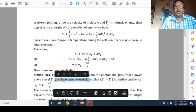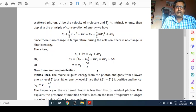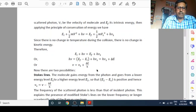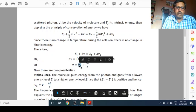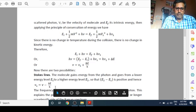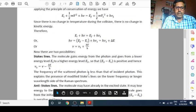When molecule will receive energy, will gain energy, it will come in excited state and will go from lower energy level to higher energy level. Here, lower energy level stands for E1 and E2 stands for higher energy level, so that E2 minus E1 is positive. Because it goes to higher energy level after gaining energy. And hence, nu1 is equal to nu minus del E by H. You can see, the frequency of the scattered photon is less than that of incident photon due to this minus sign. This explains the presence of modified Stokes lines.